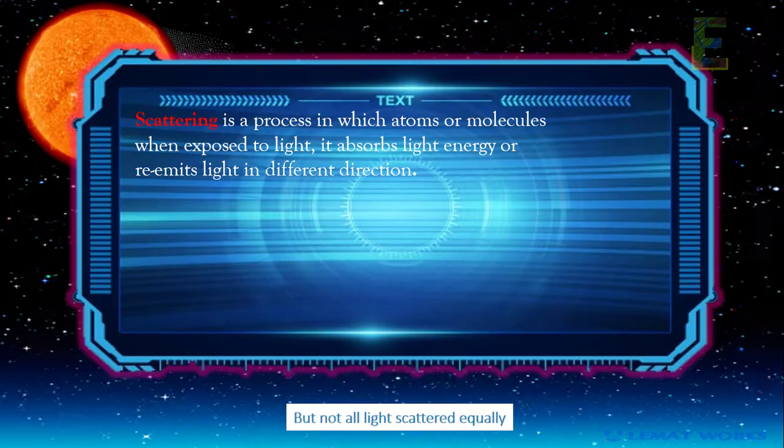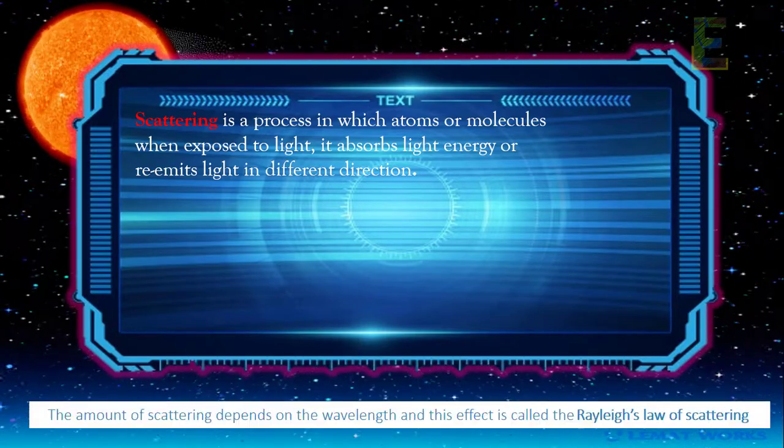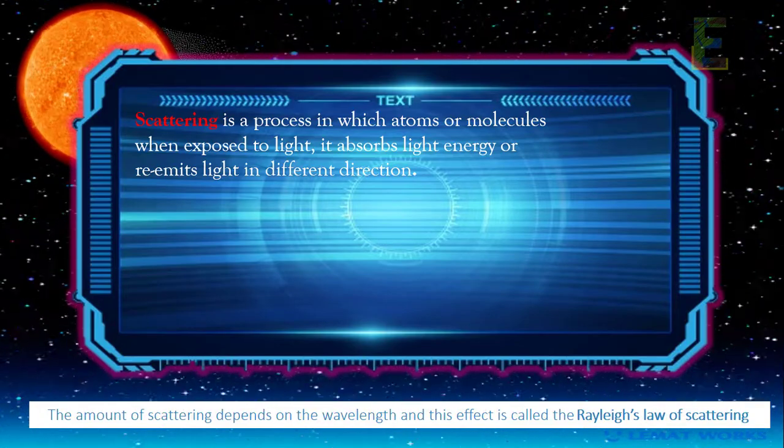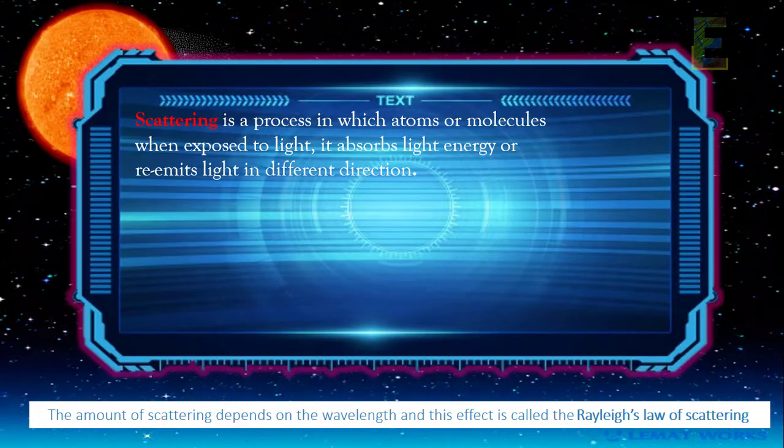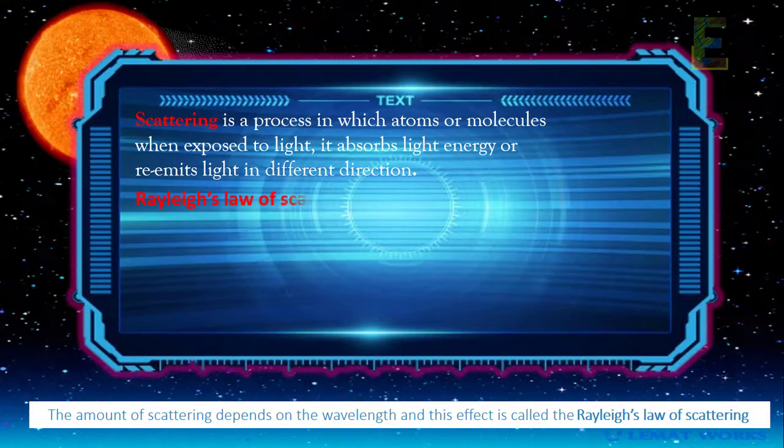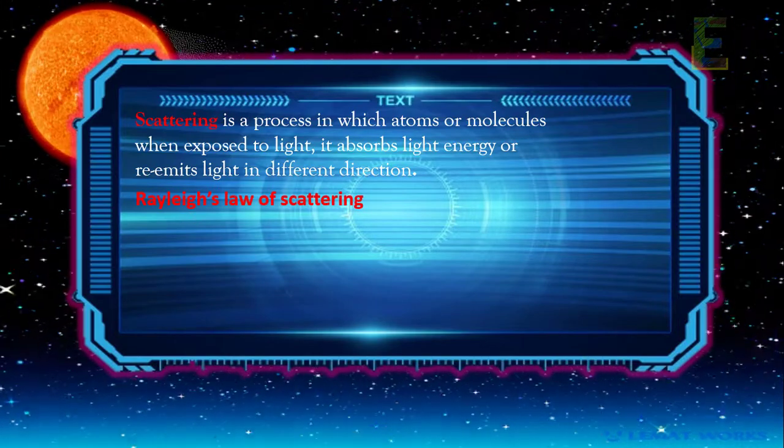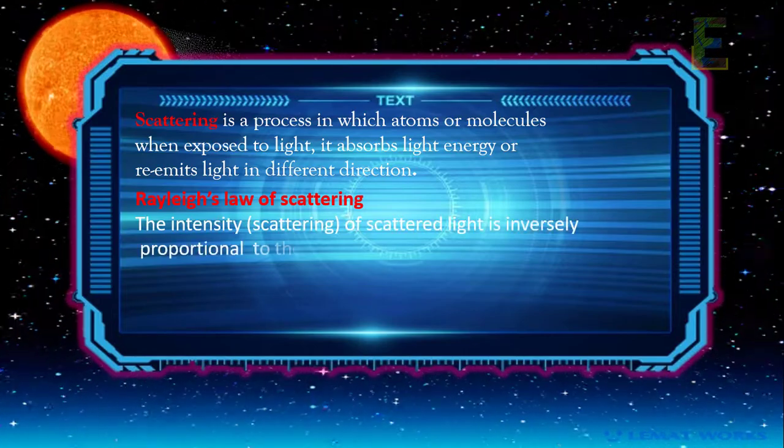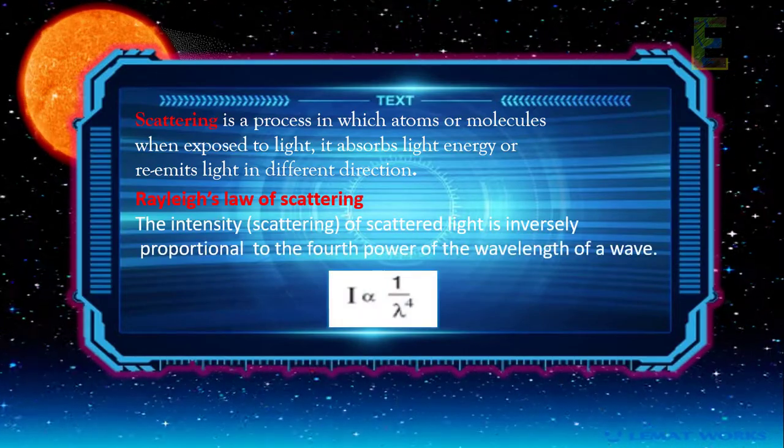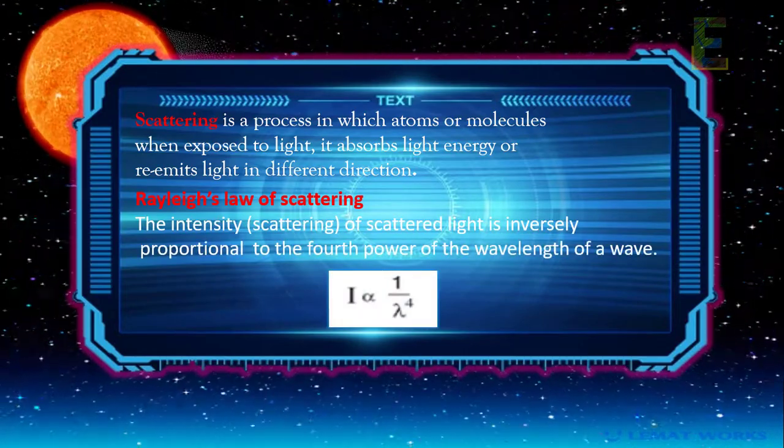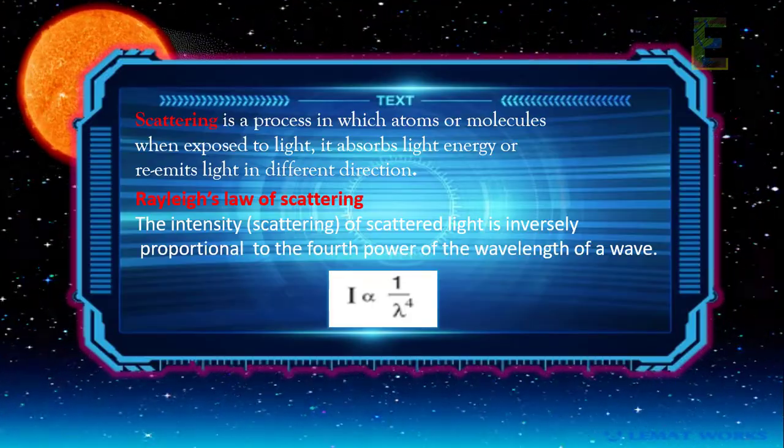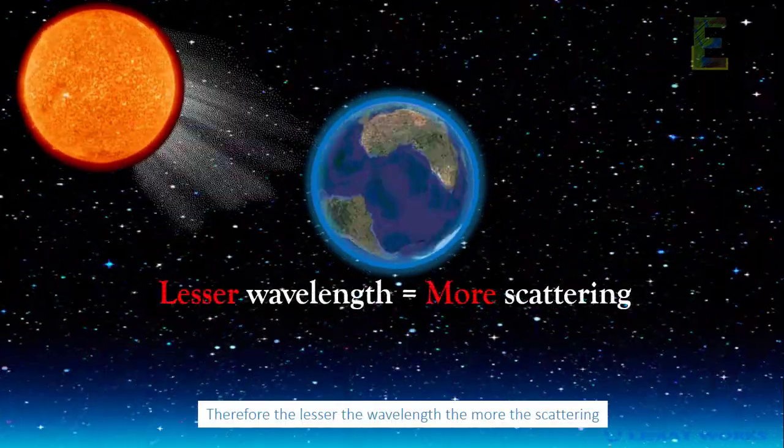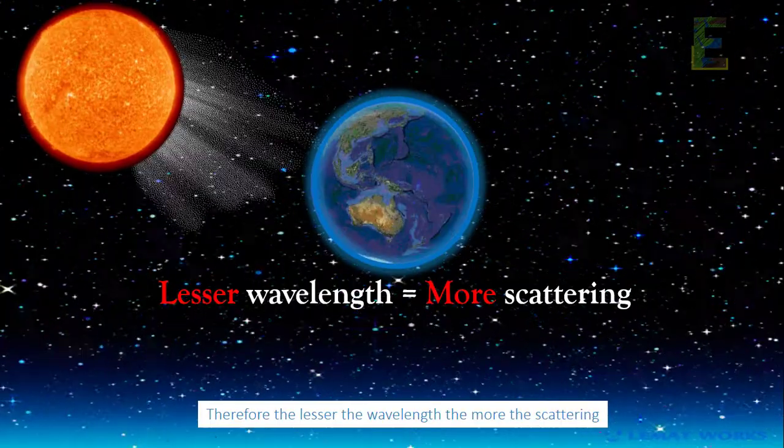But not all light is scattered equally. The amount of scattering depends on the wavelength and this effect is called Rayleigh's Law of Scattering. According to this law, the intensity of scattered light is inversely proportional to the fourth power of the wavelength of a wave. Therefore, the lesser the wavelength, the more the scattering.